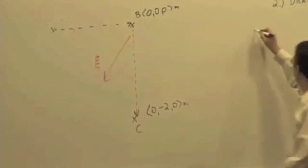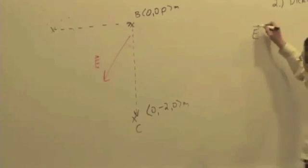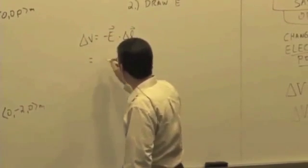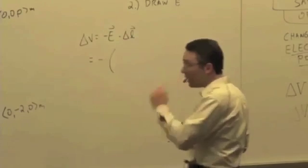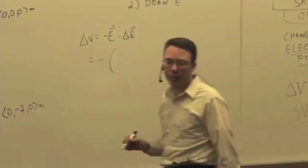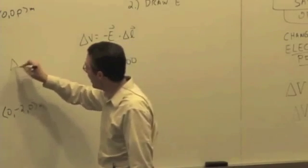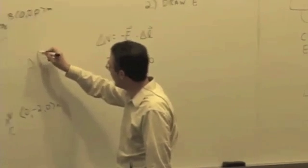Okay. So, negative electric field dot delta L is delta V. We have then negative of ex, which was negative 200, times the path delta x component, which is zero, right? So, delta L is...